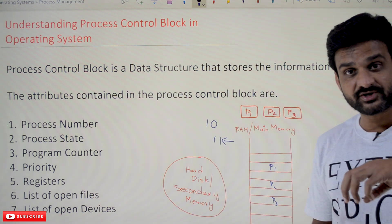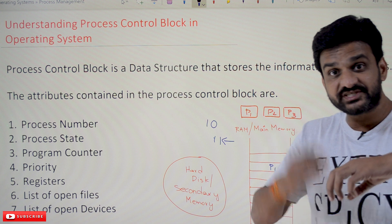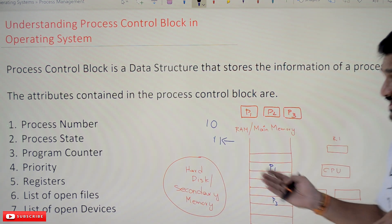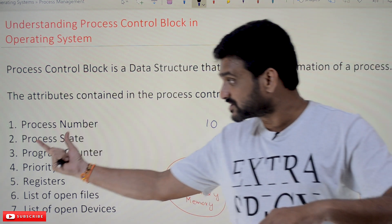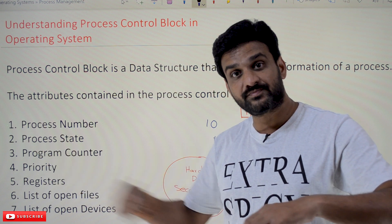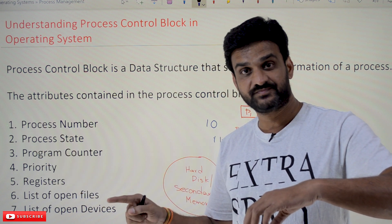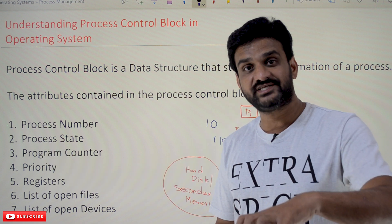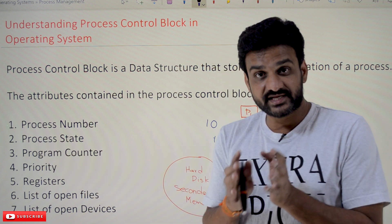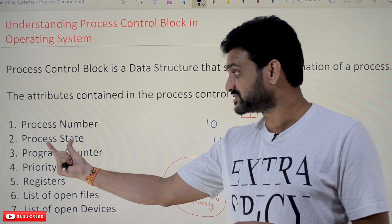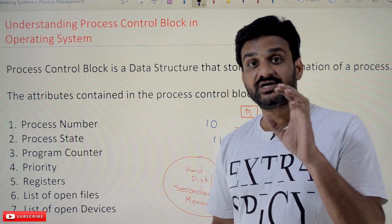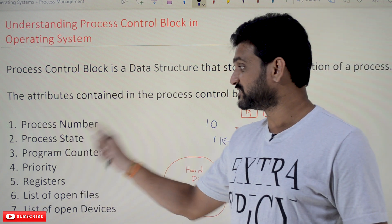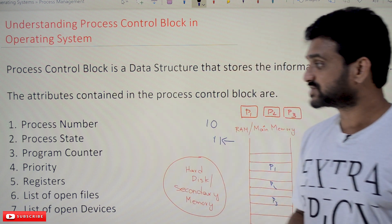At any particular point of time, the state the process is in — if it changes from one state to another, this attribute of the Process Control Block will be updated. For example, if the process is in the wait state, that is what the process state attribute captures. The process state has to be maintained and it will get maintained in the Process Control Block.